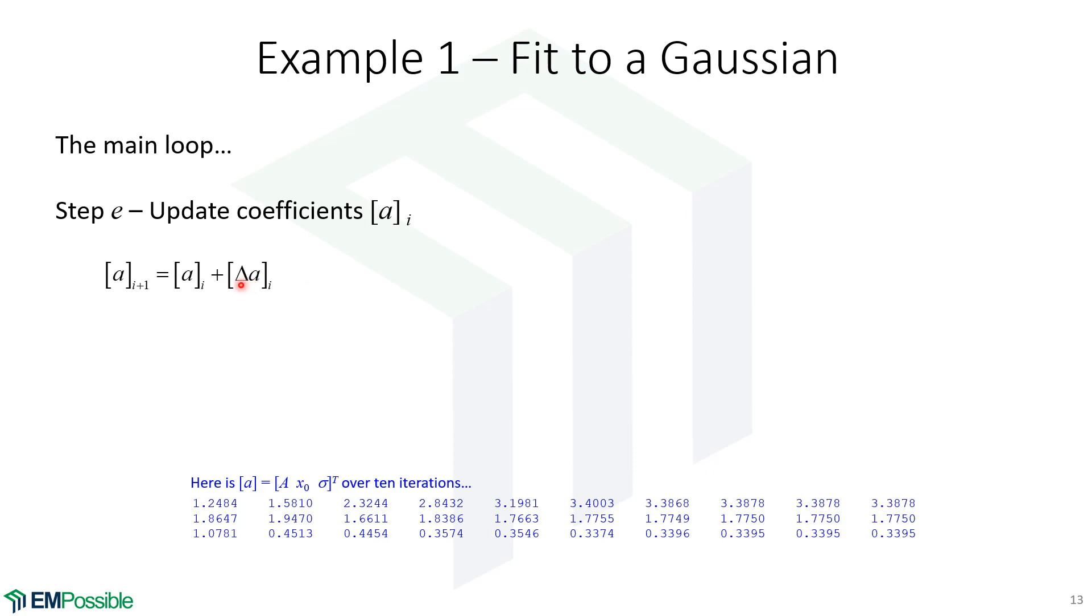What we've calculated was just how much we need to change those curve fit parameters. So, now we actually need to change the curve fit parameters. So, the new curve fit parameters are the old curve fit parameters, plus the change that we just calculated. So, here we're plotting our curve fit parameters at the first iteration, second, third. And what we can see is we can watch them converge. And they're really not changing much anymore between the ninth and the tenth iteration.